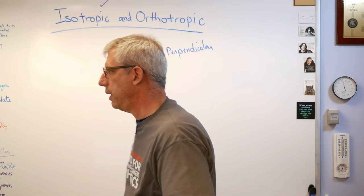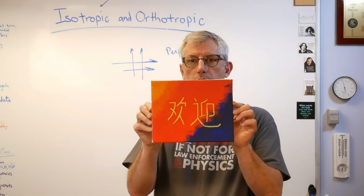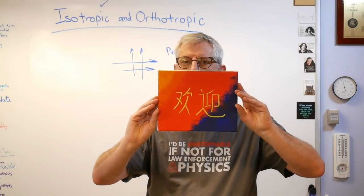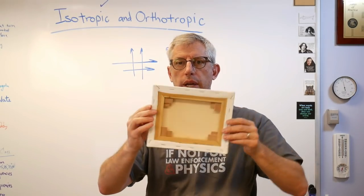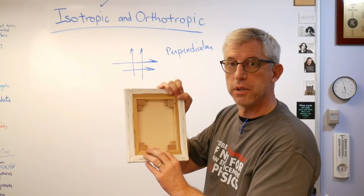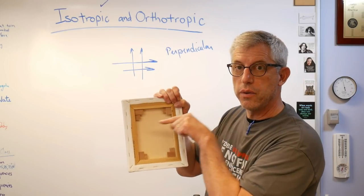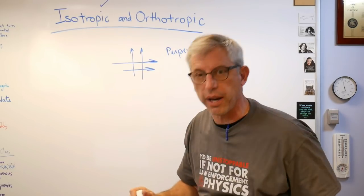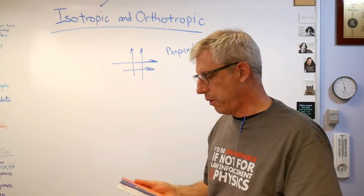Here's another example — I have an artist canvas from the craft store. It's woven fabric, so some of the fiber strands go this way and some go that way — this is an orthotropic material. If you've got clothes on right now, your clothes are probably orthotropic too.